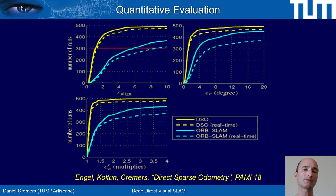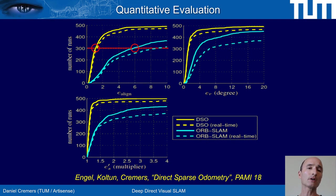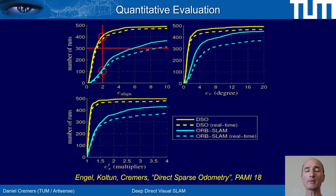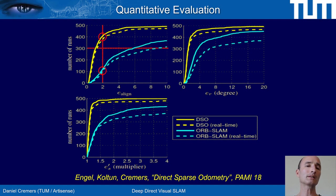You can read these numbers in many ways. For example, looking at the best 300 sequences: where ORB-SLAM has an error of 6, DSO has an error of 1 — reducing the error by a factor of 6. Similarly, imposing a maximum error of 2, how many of 500 sequences can we track? ORB-SLAM can track about 100; we can track about 400, implying robustness increased by a factor of 4. This holds similarly for rotational error and scale drift.